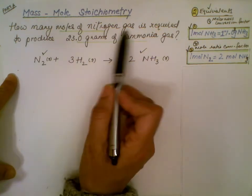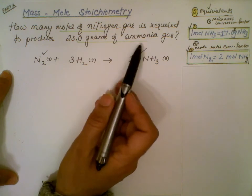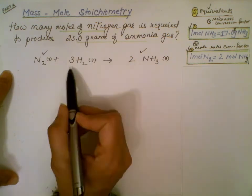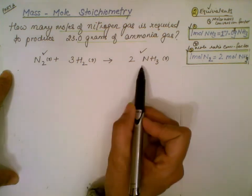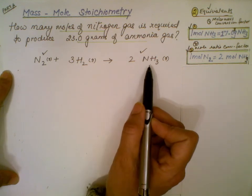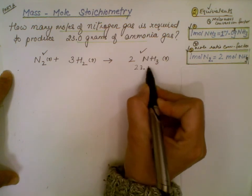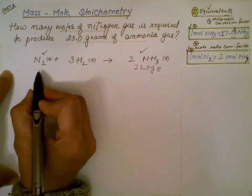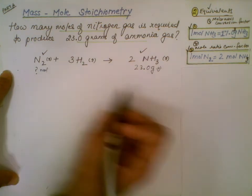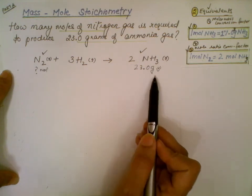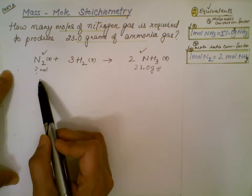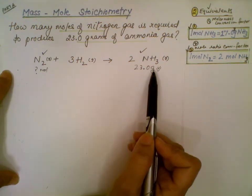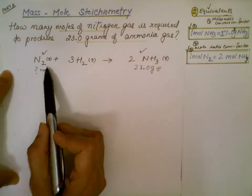Here is the problem: how many moles of nitrogen gas are required to produce 23.0 grams of ammonia gas? Generally, only word equations are given, so you want to make sure you write the balanced equation first. So 23.0 grams of ammonia is given — that is our known. What do I have to find? I have to find moles of nitrogen gas, so I'll put a question mark. We go from substance A (known) to substance B (unknown) — from the mass of ammonia to the moles of nitrogen gas.